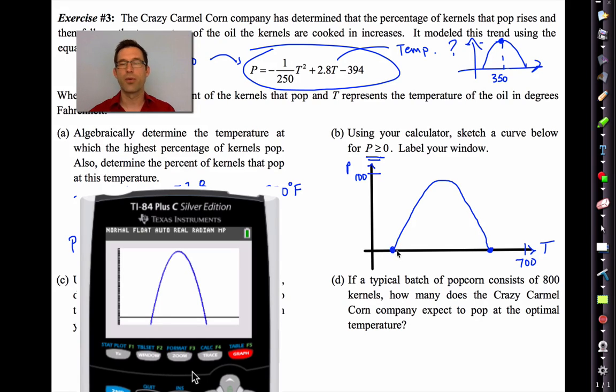I don't need to draw any of the area that is below the x-axis. Maybe I'll even kind of label it like this. T, P, 100, 700. And then I see something that kind of looks like this. Terrible looking parabola, but I'll live with it. The percentage of the kernels that are being popped, or that are popping, is increasing up to a point. And of course, we know what point this is. This is 350, 96. They're increasing up to a point, then they're decreasing.